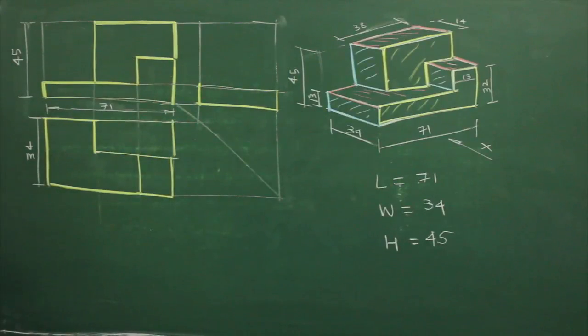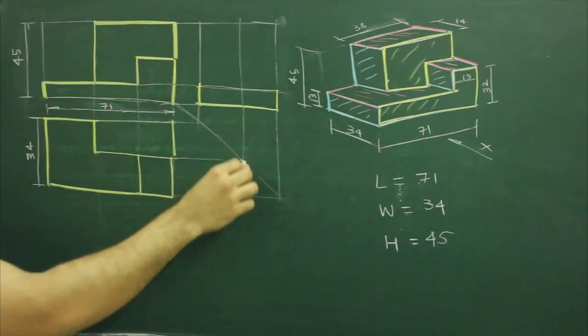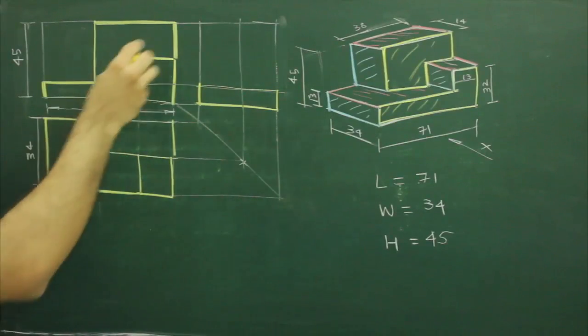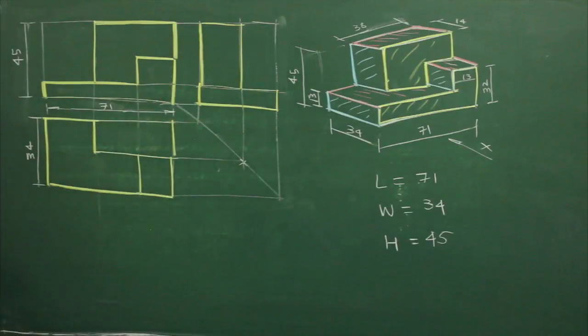Then for next block, we can project from top view, wherever it will cut, from there we will go up. So we will get block 2 as well and for block 3,